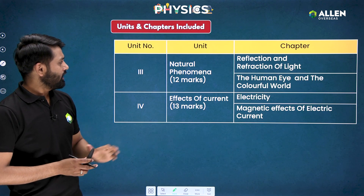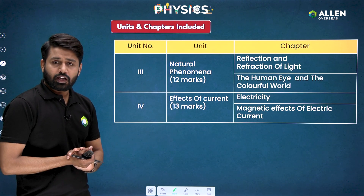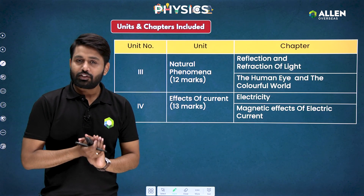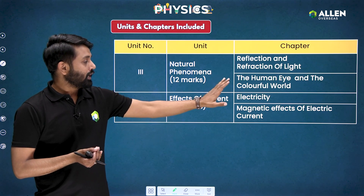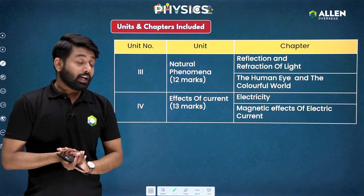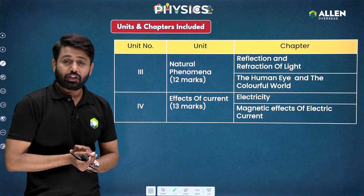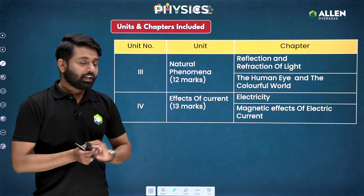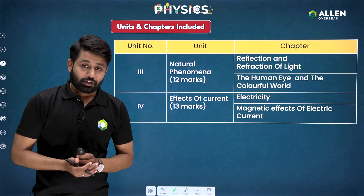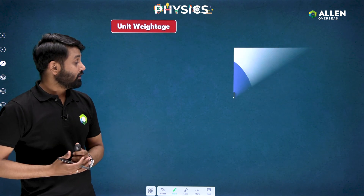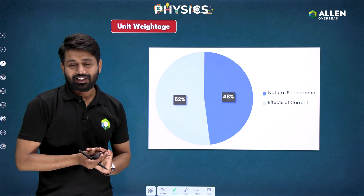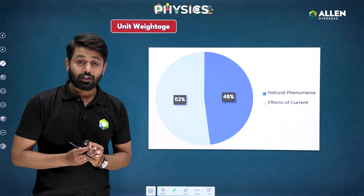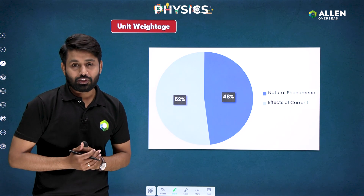Let's begin with the units and chapters included. There are two units. Unit one is Natural Phenomena — this unit is of 12 marks and includes two chapters: Reflection and Refraction of Light, and The Human Eye and the Colorful World. The next unit is Effects of Current, worth 13 marks, and includes Electricity and Magnetic Effects of Electric Current. Both units have approximately equal weightage: 48% for Natural Phenomena and 52% for Effects of Current, so give equal attention to both.